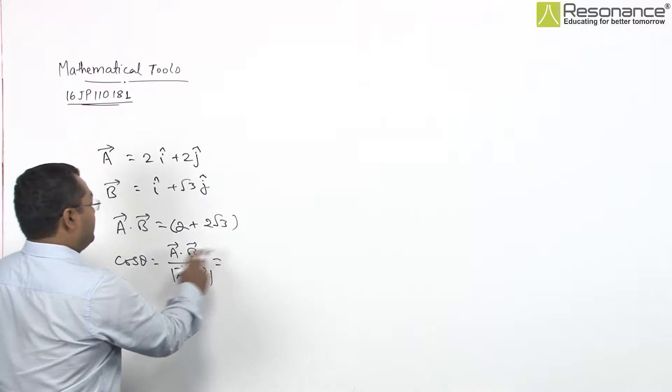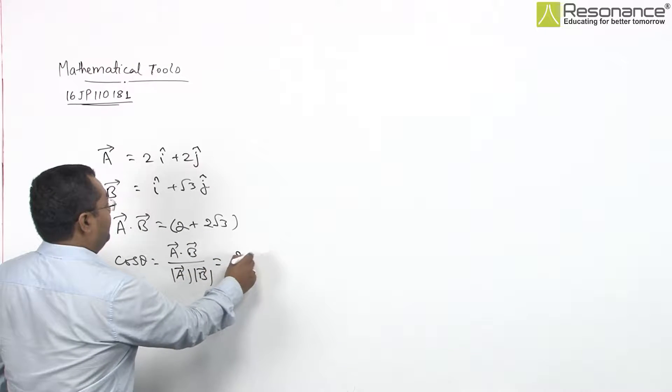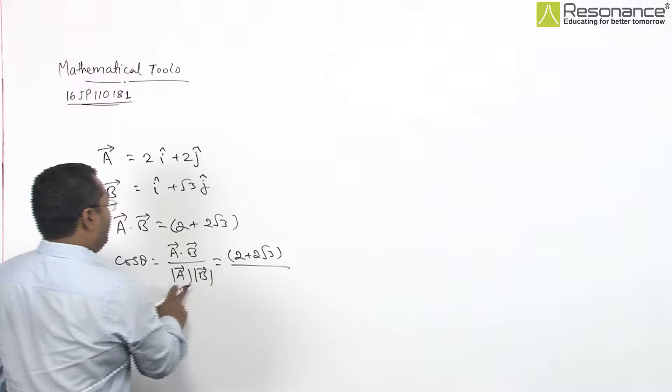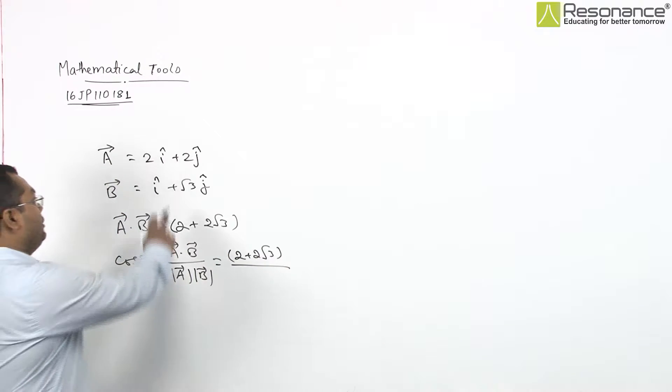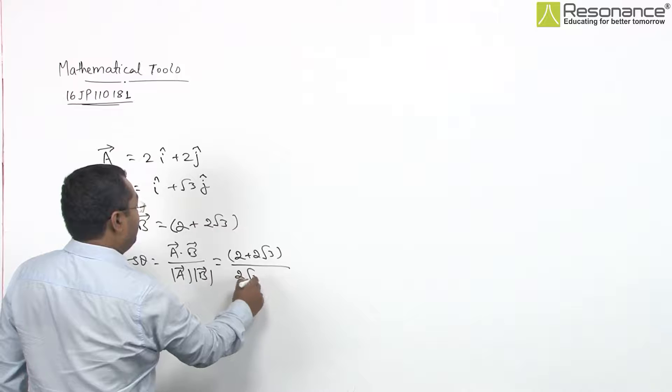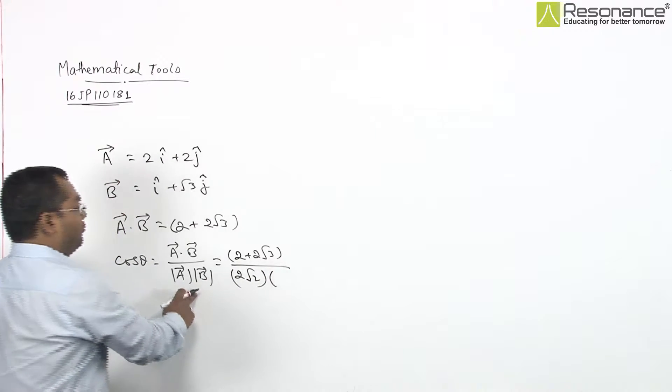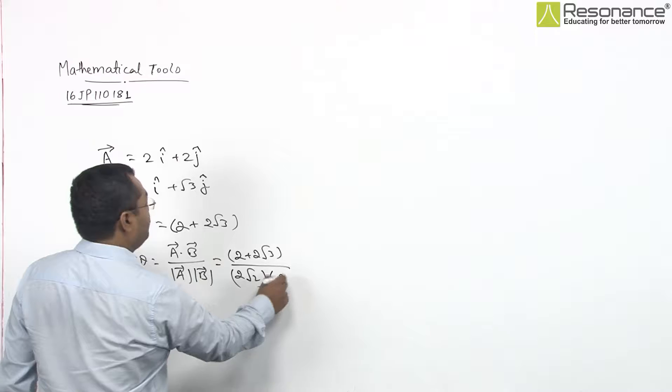We see result of A dot B is 2 plus 2 root 3 upon modulus of A will be 2 root 2 and modulus of B will be 2.